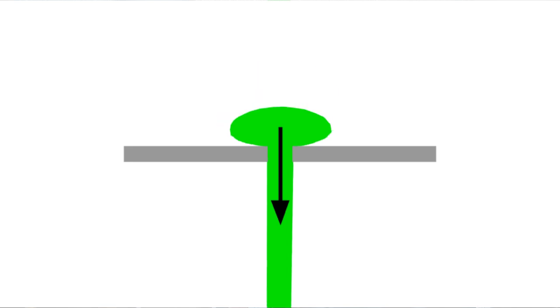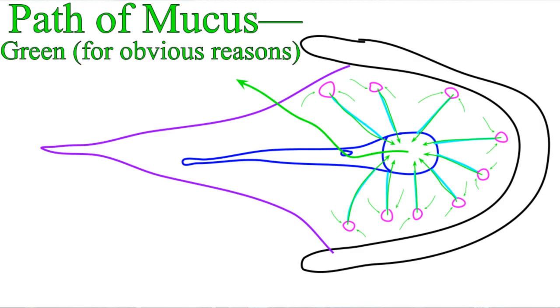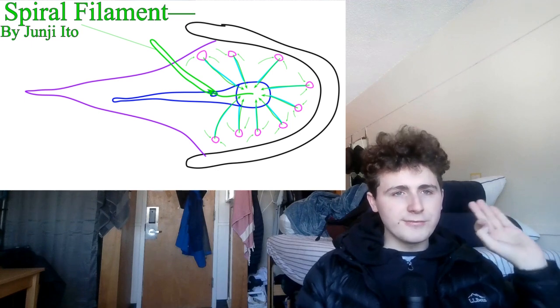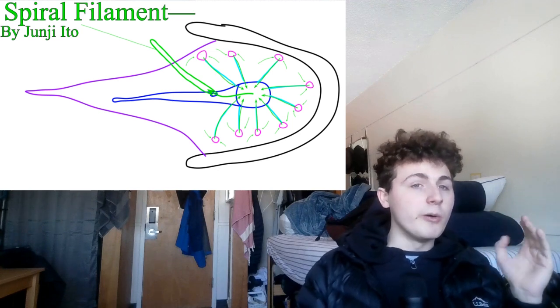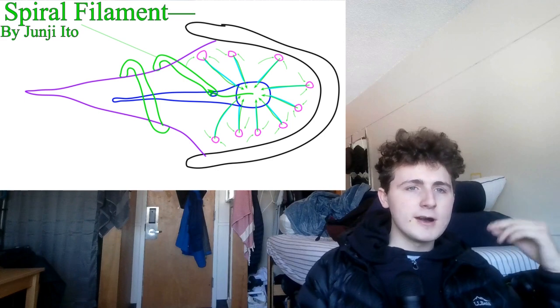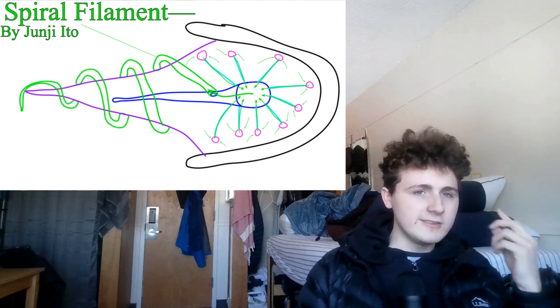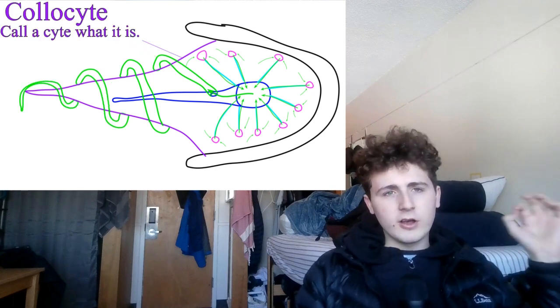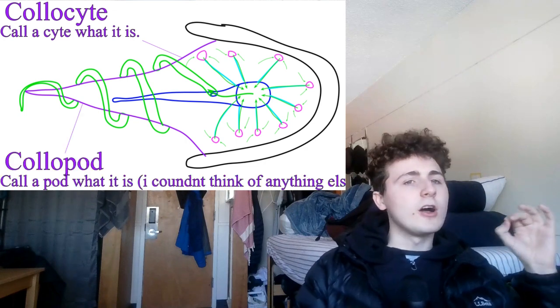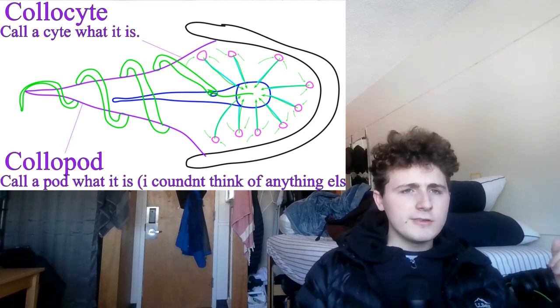This is what's called extrusion, and in coloblasts it forms a giant ball of mucus into what's called a spiral filament. Why is it called that? Well, because it's then wrapped around the main body of the coloblast, which is referred to by two names. The top of it is called the colopsite, and the bottom of it is called the colopod.